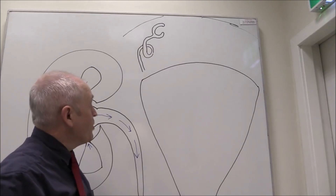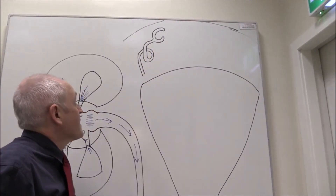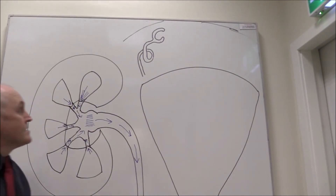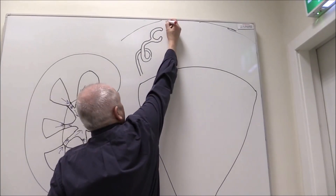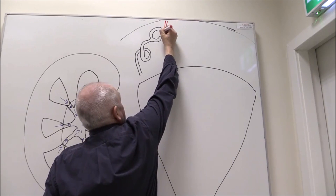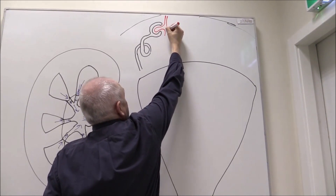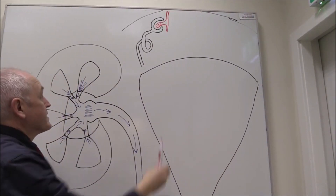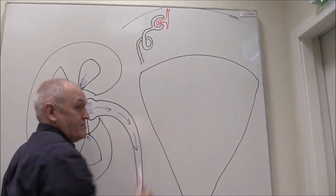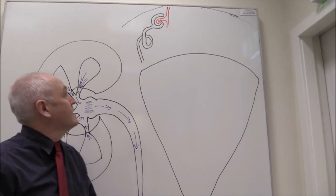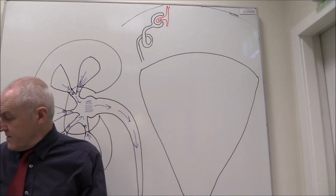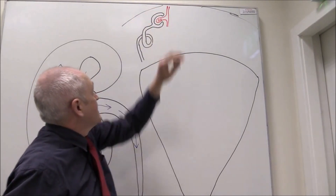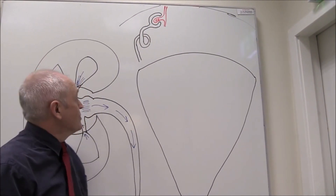So the renal corpuscle consists of the Bowman's capsule, but also of course we need a blood supply. So there's going to be an afferent arteriole going in to the glomerulus — the glomerulus being the ball of capillaries within Bowman's capsule. Collectively, the glomerulus and the capsule we would call a renal corpuscle.